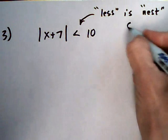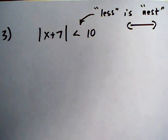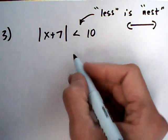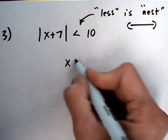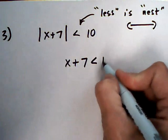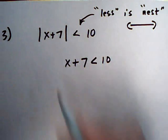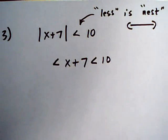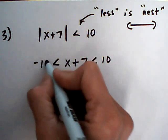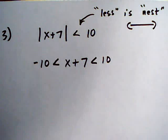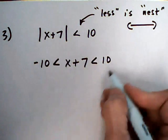So in other words, you're going to get a nested result. So what we're going to do is take the insides out, x plus 7. Keep the less than 10. And we're going to nest it within a greater than minus 10. And then we go ahead and solve the three-part inequality.